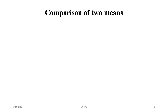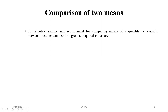If we have two means for variables for a group, then how will we calculate the minimum sample size? To calculate sample size requirement for comparing means of a quantitative variable between treatment and control groups, we need to understand the process of the calculation.